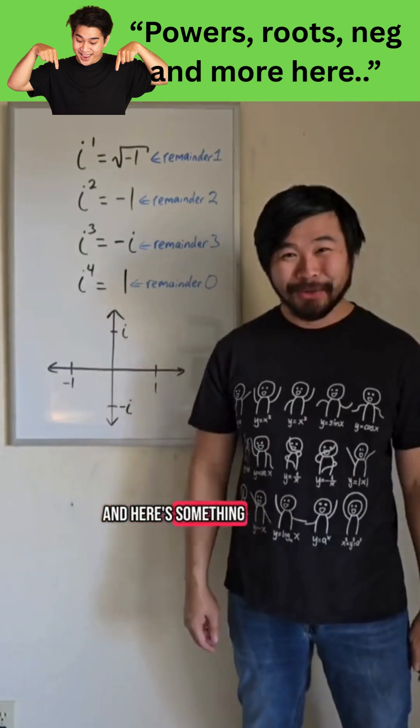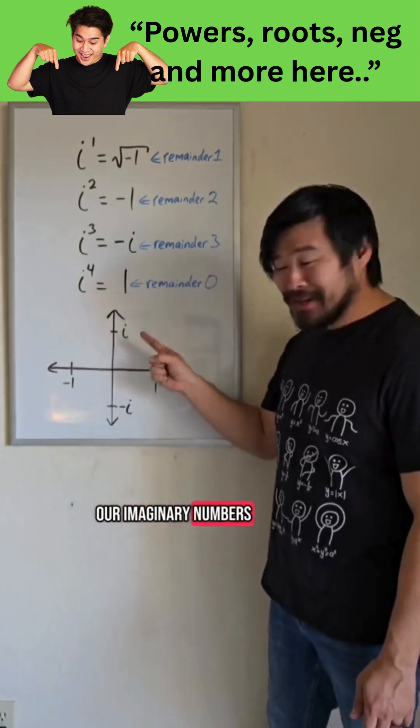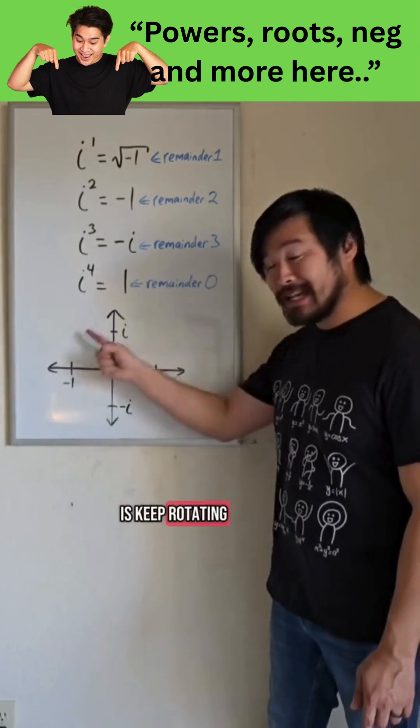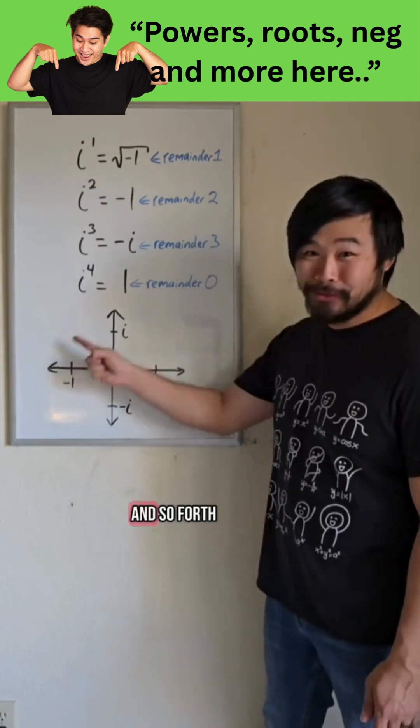And here's something cool. We can connect this to the complex plane. We have our real numbers and our imaginary numbers. So all we have to do is keep rotating counterclockwise to get our answer. i, negative 1, negative i, 1, and so forth.